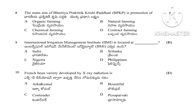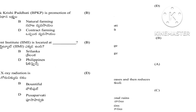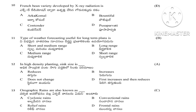Question 9: International Irrigation Management Institute location — India, Sri Lanka, Nigeria, or Philippines. The answer is Sri Lanka. Question 10: French bean variety developed by X-ray radiation — Arka Komal, Bountiful, Contender, or Pusa Parvati. The answer is Pusa Parvati.